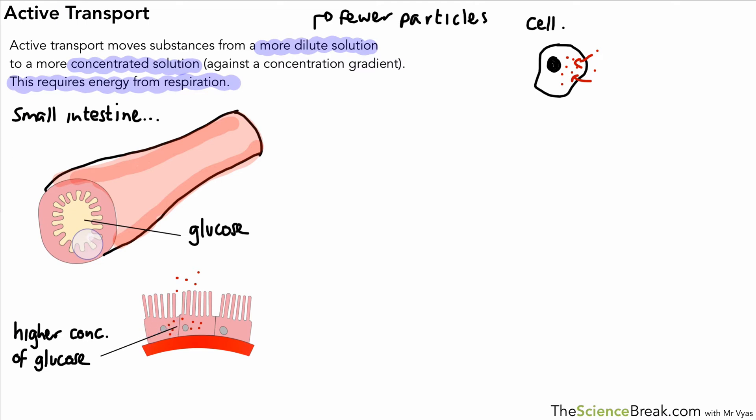And we don't want to lose any of that glucose because it's a very valuable substance for the body. So we would use active transport as described by this definition here: we've got a more dilute solution on the outside now and a higher concentration, or a more concentrated solution, on the inside.